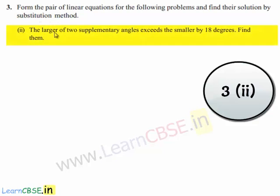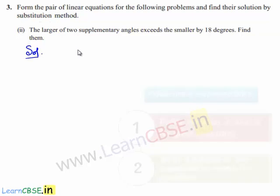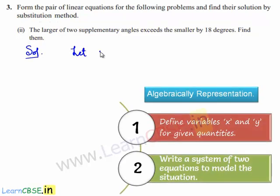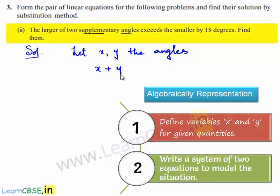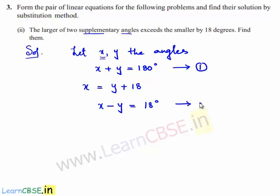Coming to the second part: the larger of two supplementary angles exceeds the smaller by 18 degrees, find them. Let x and y be the angles. Since they are supplementary, x plus y is equal to 180 degrees. Also, assuming x is the larger angle, x is equal to y plus 18, which means x minus y is equal to 18 degrees. This is equation number one and this is equation number two.